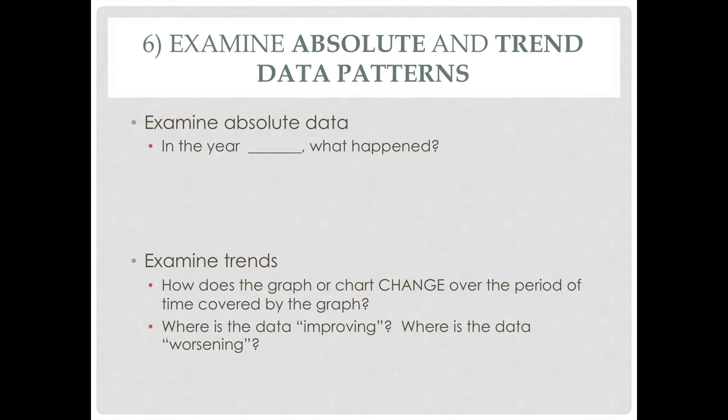Step six: we have to look at absolute and then trend data patterns. Look at absolute data — in what year did something happen? Can we find an exact date? But also look at the trends: where does this graph or chart show change? Where is the data improving, and where is it worsening? Just because something goes up and to the right does not necessarily mean it is better — it depends on what the key, legend, or data is actually telling us. We want to look at what is absolutely reported and what patterns are being reported.